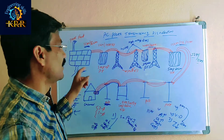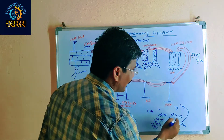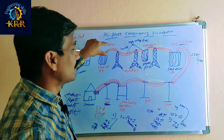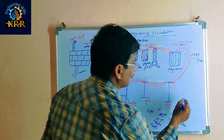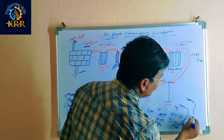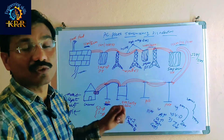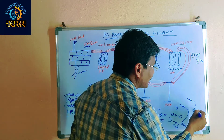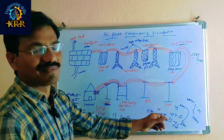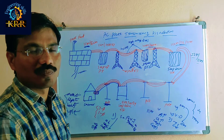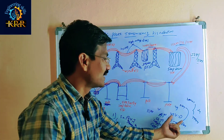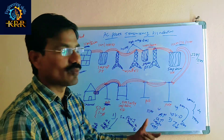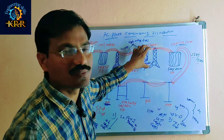For voltage drop comparison: at 11kV, a 1kV drop means 10kV arrives. But when stepped up to 400kV, even with a 1kV drop, 399kV arrives. Compared to the 11kV case, this is much less percentage voltage drop, so losses are also less.